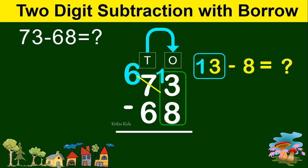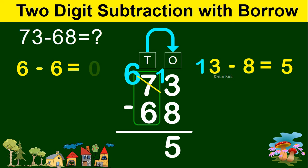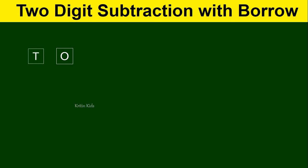13 minus 8 gives us 5, so let's write 5 here. Now let's go to the tens position. 7 has become 6, so it is 6 minus 6, which gives us 0. We write 0 here. So 73 minus 68 gives us 5.